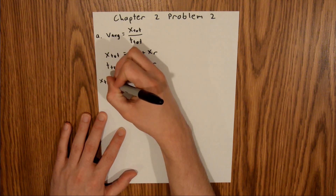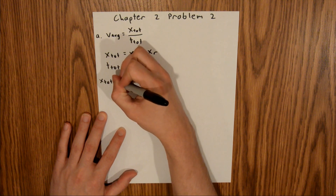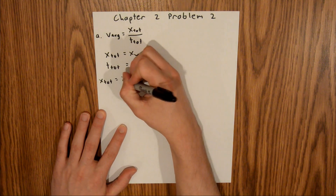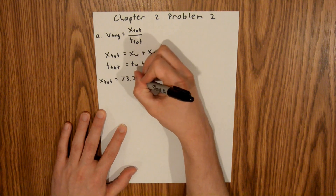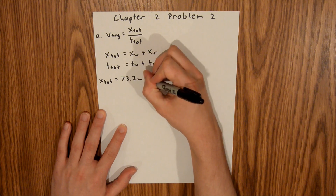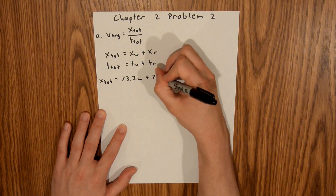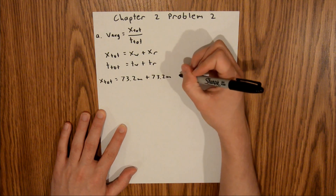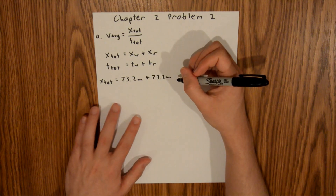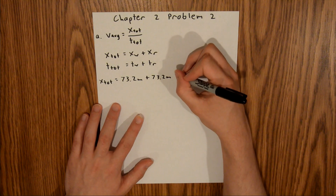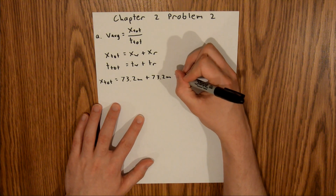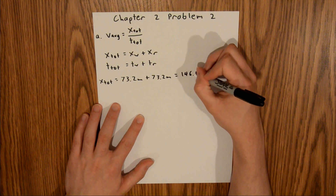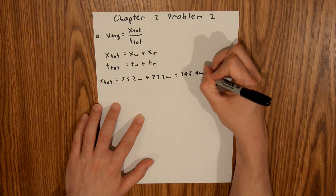X-total is equal to 73.2 meters plus 73.2 meters. And if you plug that into your calculator, you will find that X-total is equal to 146.4 meters.